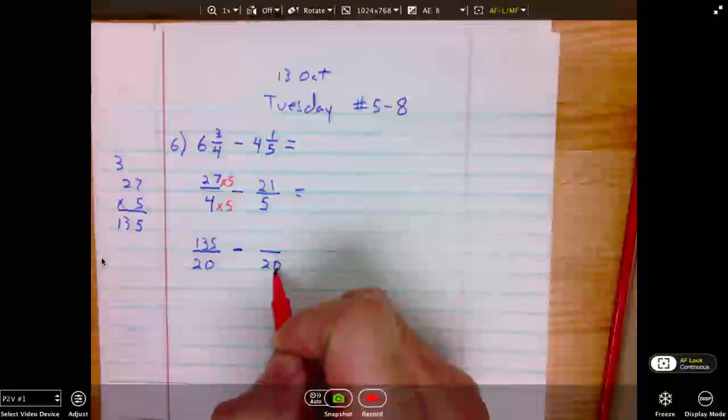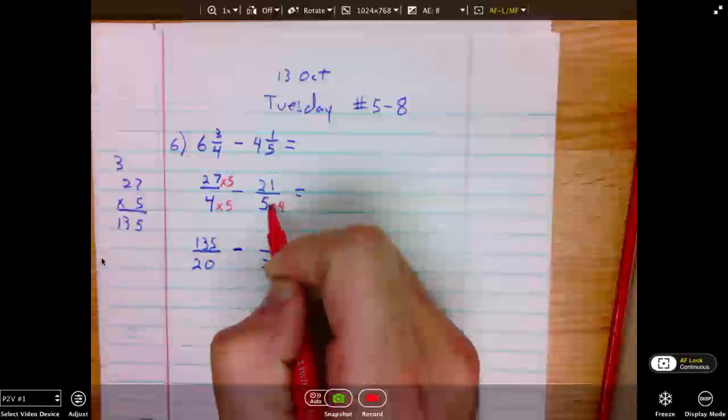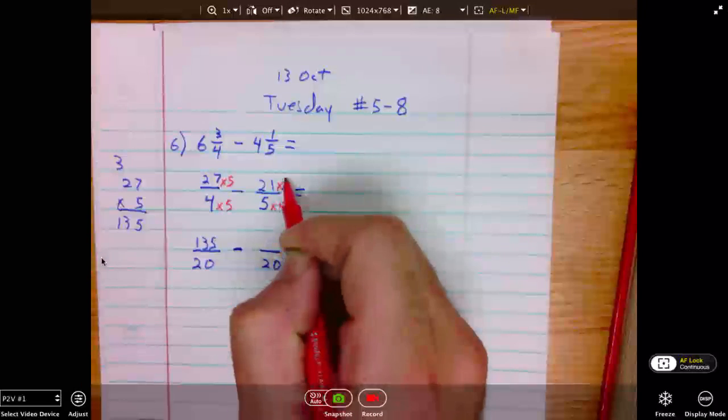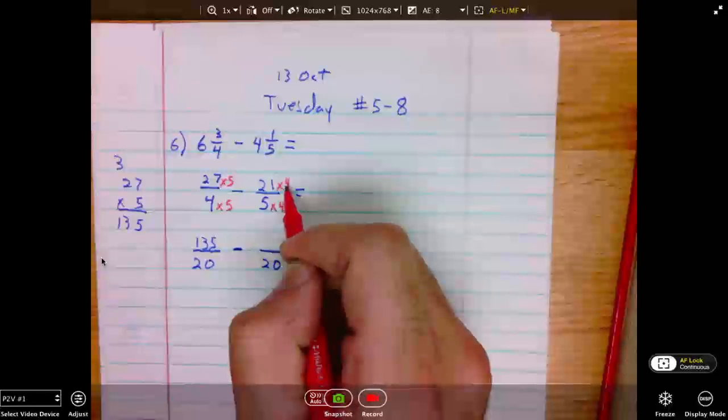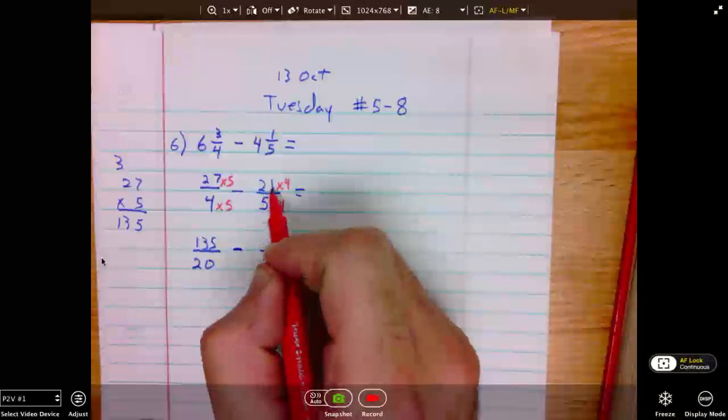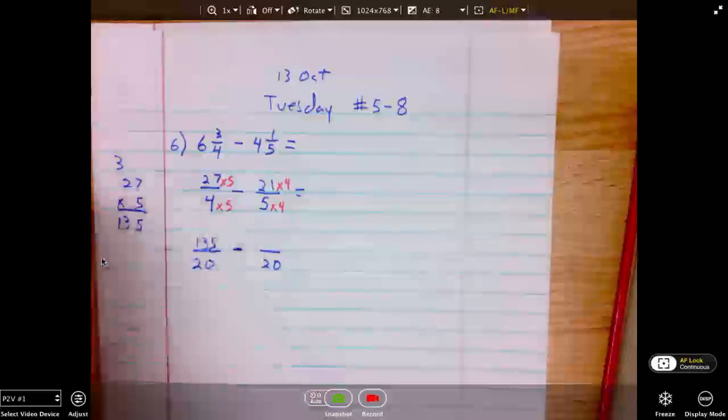5 times what yields 20? 5 times 4. Thus, we multiply the numerator times 4. 21 times 4 is pretty easy. Multiplying both digits by 4 yields 84.